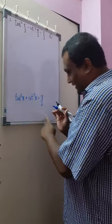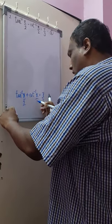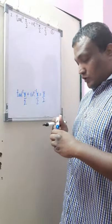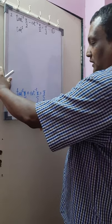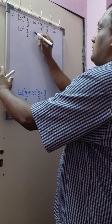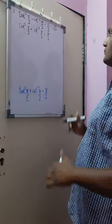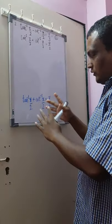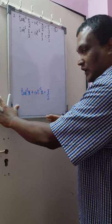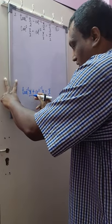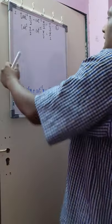Understand one thing — this identity holds for any value of x, absolutely any value. So I can substitute any angle I need. I will take the given equation as equation number 1, and I will incorporate the formula: tan inverse of x plus cot inverse of x equals pi by 2, with the angle matching what I need in my particular question. Then I can add the two equations together.